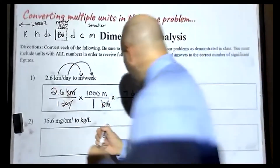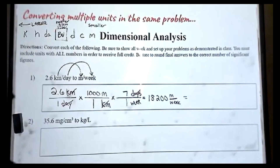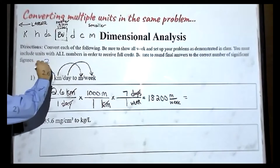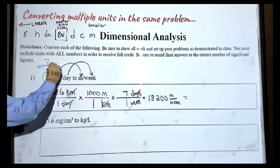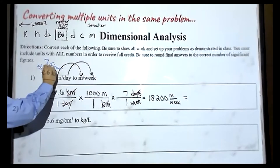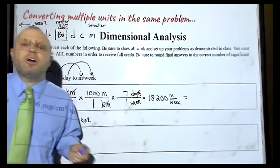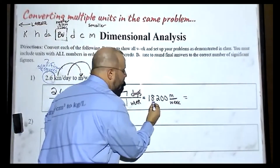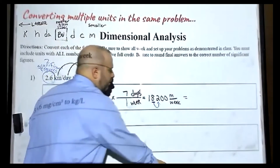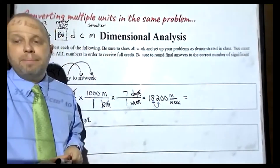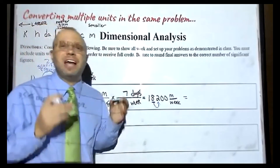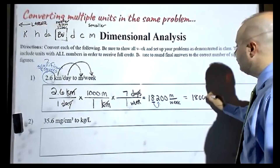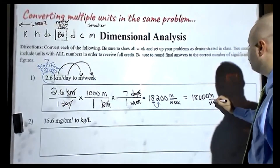To finish this problem off, we're going to talk about significant figures. Our answer can only have two significant figures. So we're going to keep 1, we're going to keep 2, and we're going to look behind it. The 2 means we're not going to round up. So be careful — the answer is not 18, we don't chop off the end, we just round it. So we get 18,000 meters per week as our final answer.